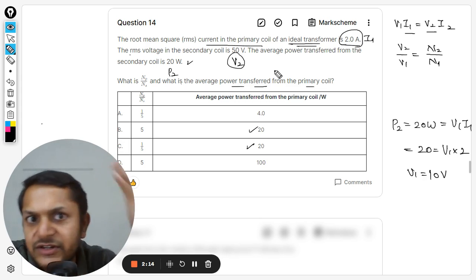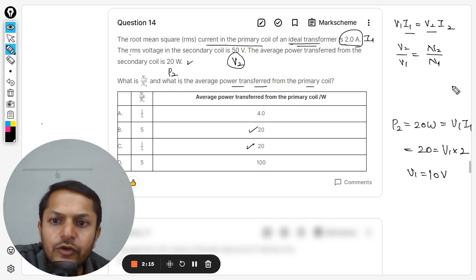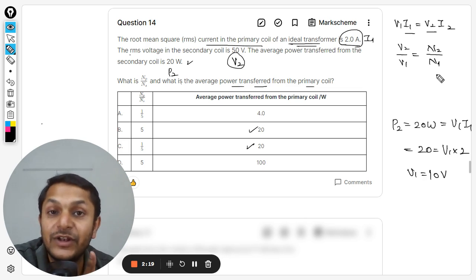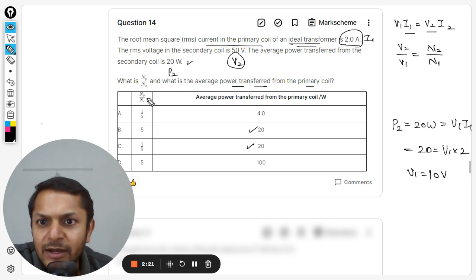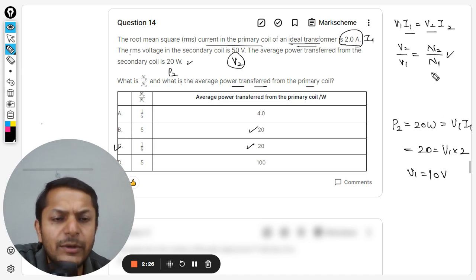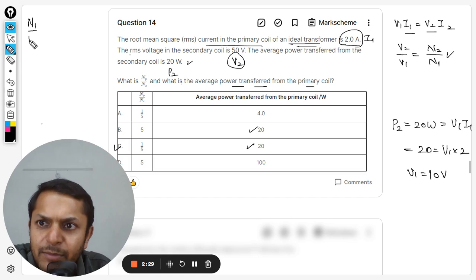Now we want to find the transformation ratio. Clearly, the transformation ratio will be greater than 1, but it is np by ns, so that will be 1 by 5. So the answer should be C. But still, we are going to apply this formula, so n1 by n2—I've taken it, I'm going to reciprocal it—so that is v1 by v2.